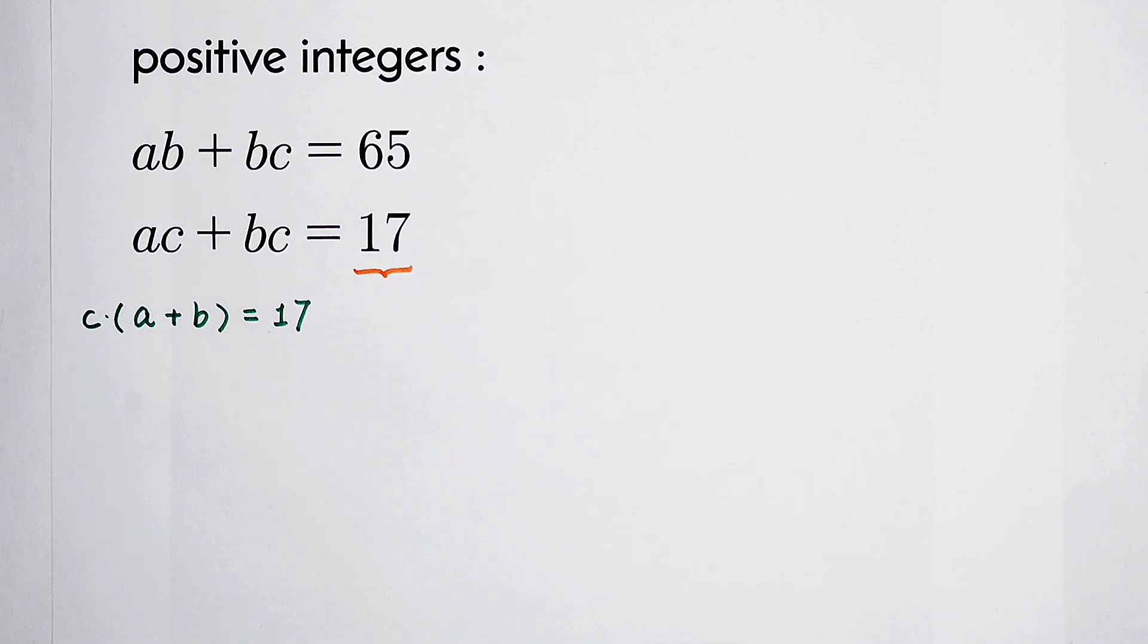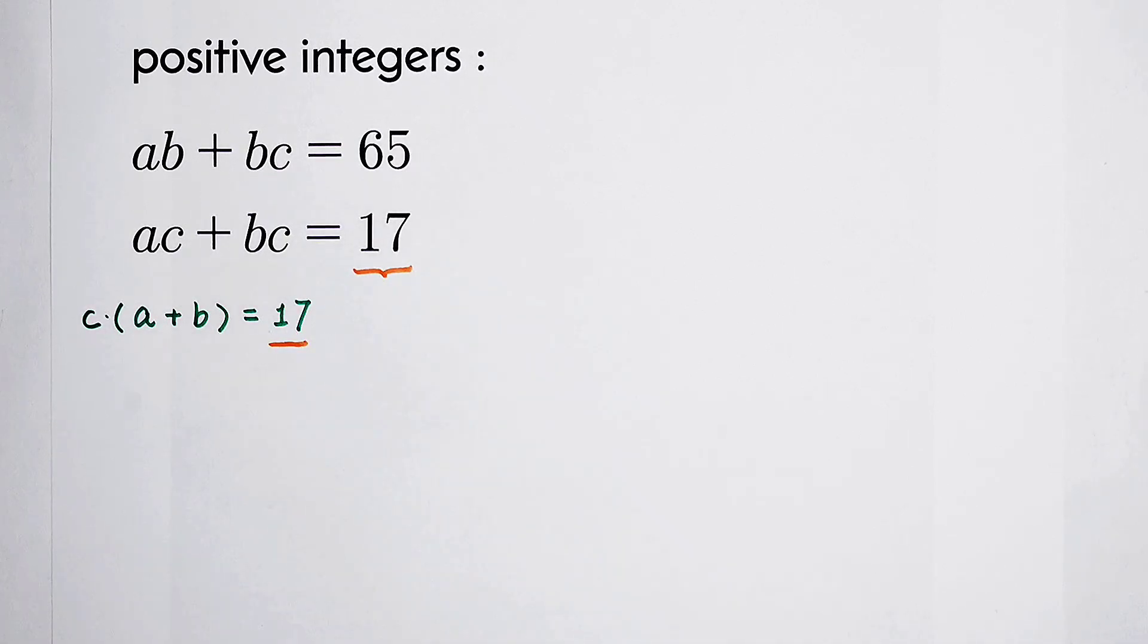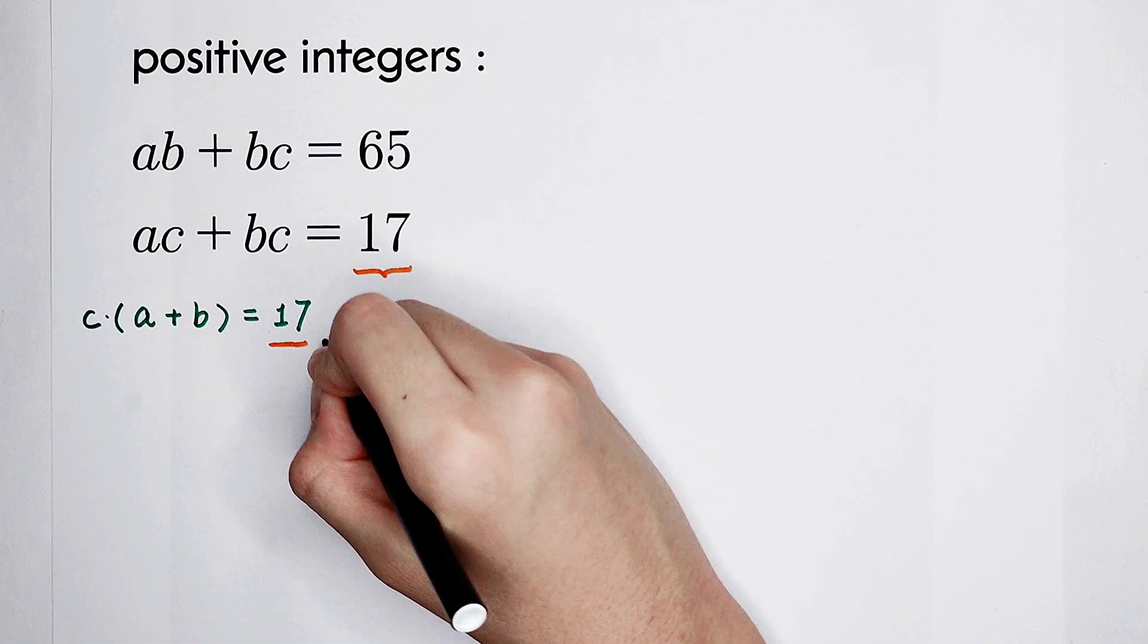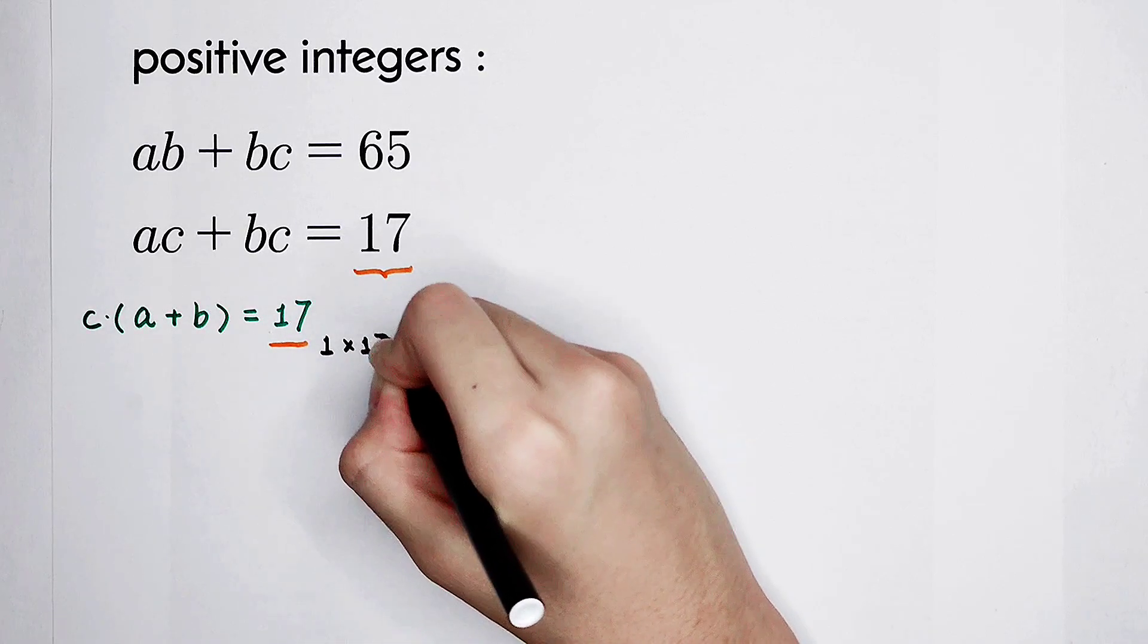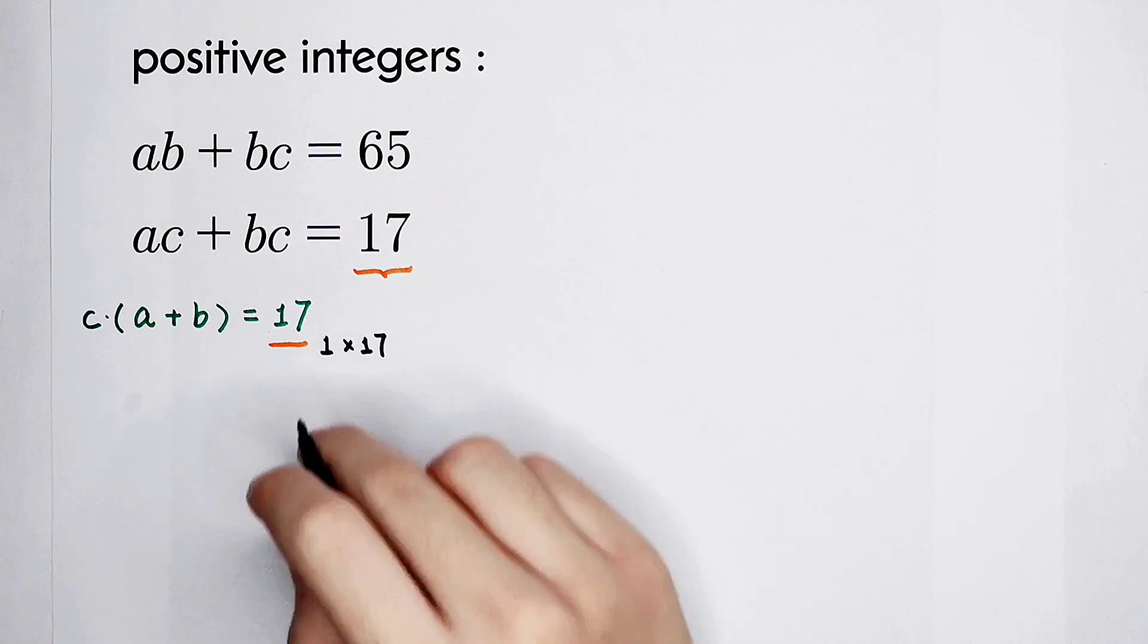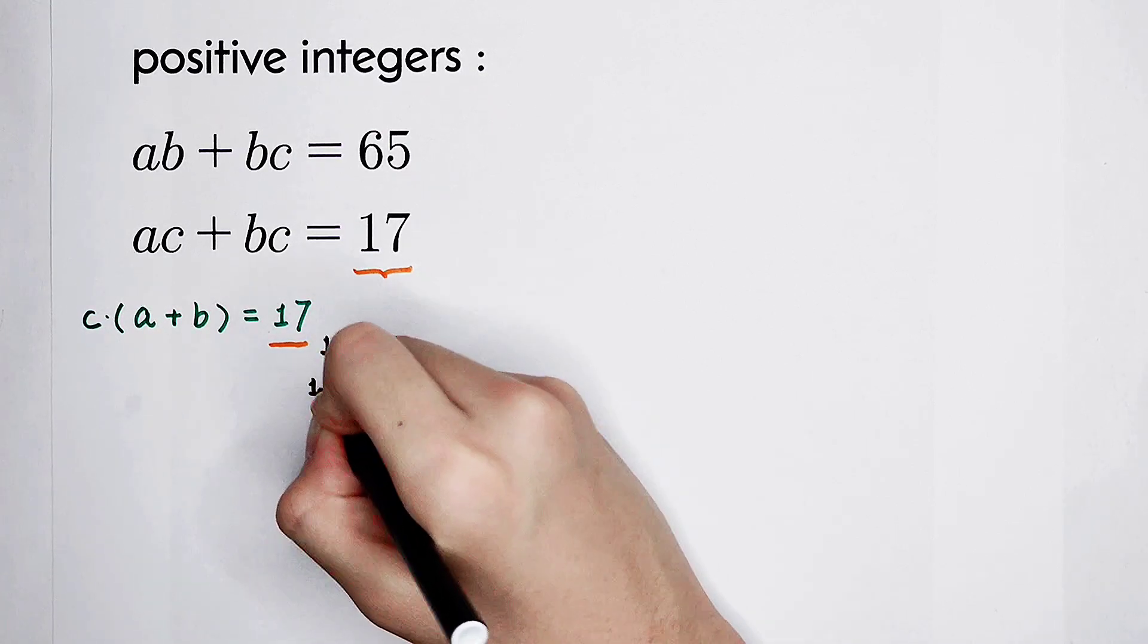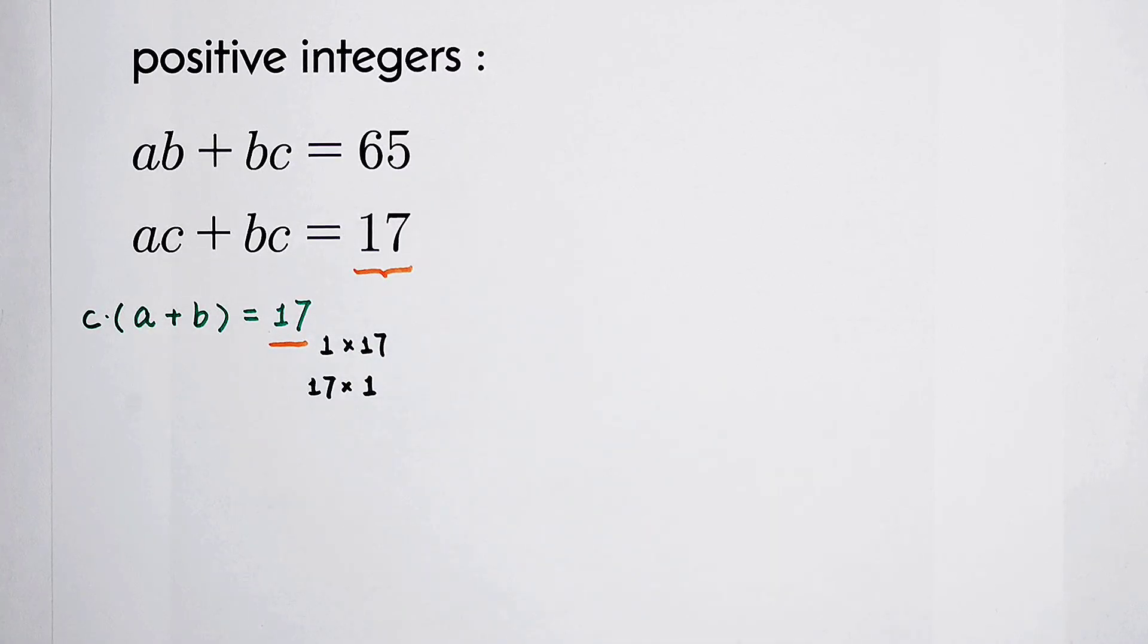17 on the right-hand side of this equation. So since 17 is a prime number, and a, b, and c are all positive integers, 17 can be only factorized into 1 times 17, because it's a prime number.